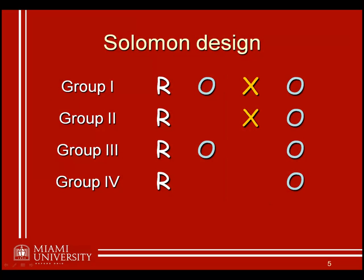If one factor is pretest with two different levels — yes or no — and the other factor is treatment or manipulation with two different levels — yes or no — then the factorial combination of those two design elements produces the four groups shown in the Solomon design.